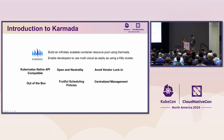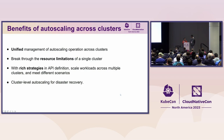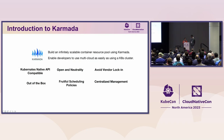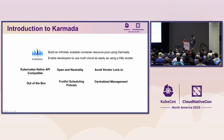Karmada also provides built-in policies for scenarios like active-active, remote disaster recovery, and geo-redundant. It has a variety of virtual scheduling policies like cluster affinity, multi-cluster splitting, rebalancing, and multi-dimension high availability across regions, existing clusters, and cloud providers. It also offers centralized management.